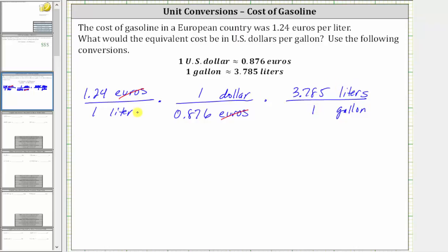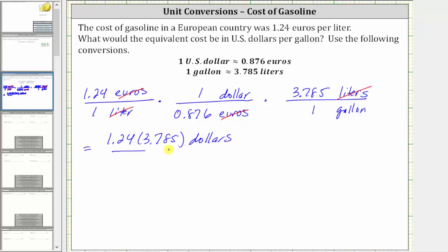Notice here we have liters divided by liters, and therefore the units of liters simplify out. Now we're left with the units of dollars per gallon. So now we multiply. In the numerator we have 1.24 times one times 3.785, and the units are dollars. In the denominator we have one times 0.876 times one, which is just 0.876, and the units are gallons.